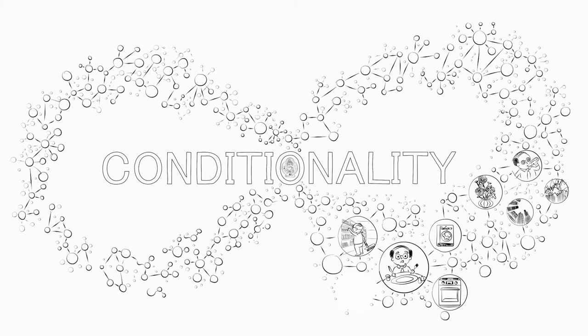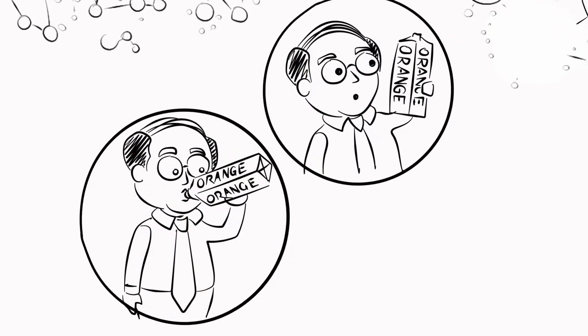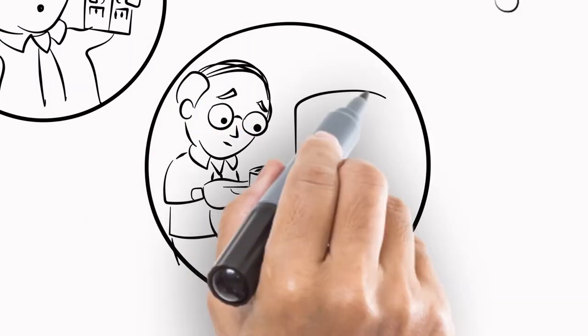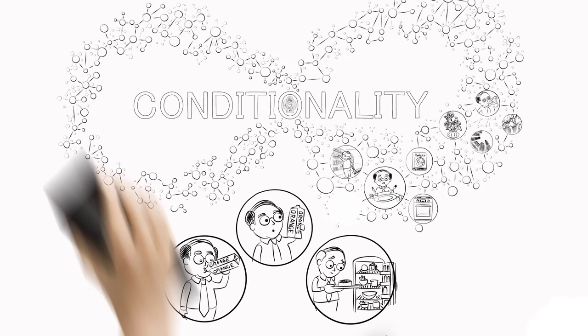But things are not connected randomly. You need the right conditions to get a particular result. You wouldn't get drunk if you drank orange juice. You couldn't cook a meal by putting it in the fridge.